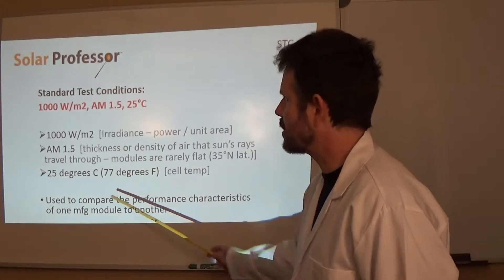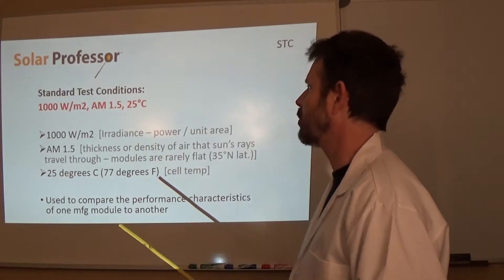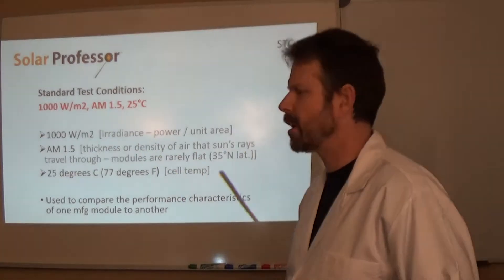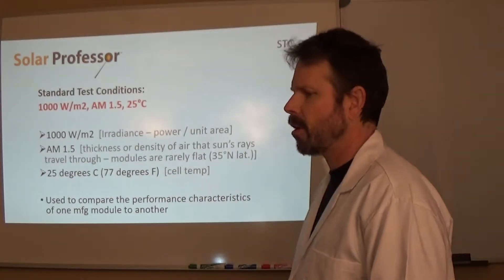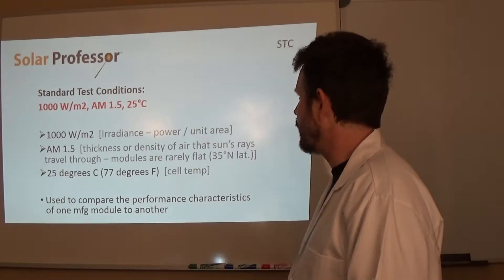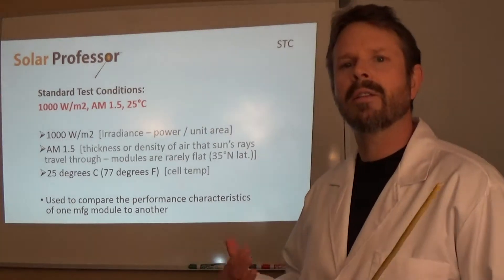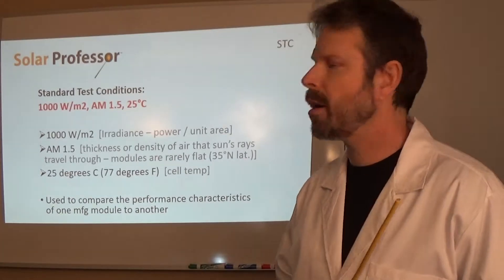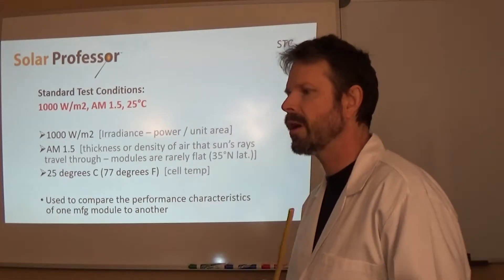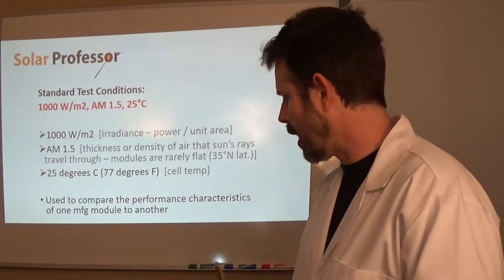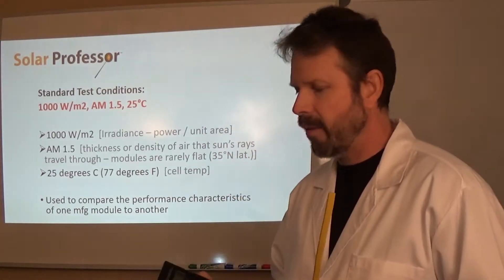This is what it breaks down to. Let's break it into pieces to get a better understanding of it. First of all is 1,000 watts per meter squared. That is basically the irradiance. That is the power of the sun. That's the sun's rays coming down and it's power per unit area of that sunlight. I actually have a reference meter here.